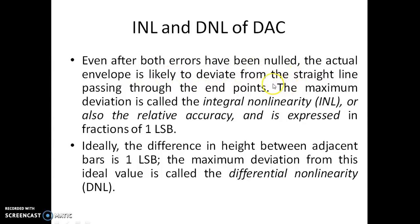The actual output envelope of a DAC is likely to deviate from the ideal straight line. The maximum deviation from this straight line is called Integral Nonlinearity (INL), where I stands for Integral, N for Non, and L for Linearity. INL is also called relative accuracy and is expressed in fractions of 1 LSB, similar to how offset error and gain error were expressed. In previous examples these were 1 LSB and minus 2 LSB; INL can also be fractional values like half LSB or minus 1.5 LSB.